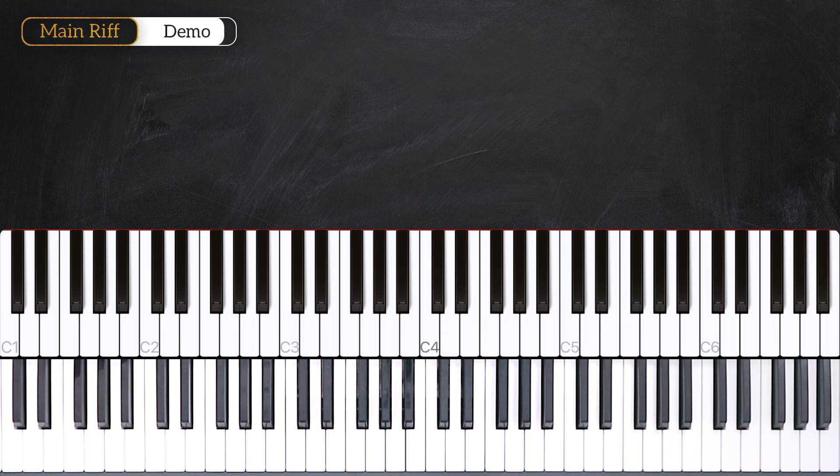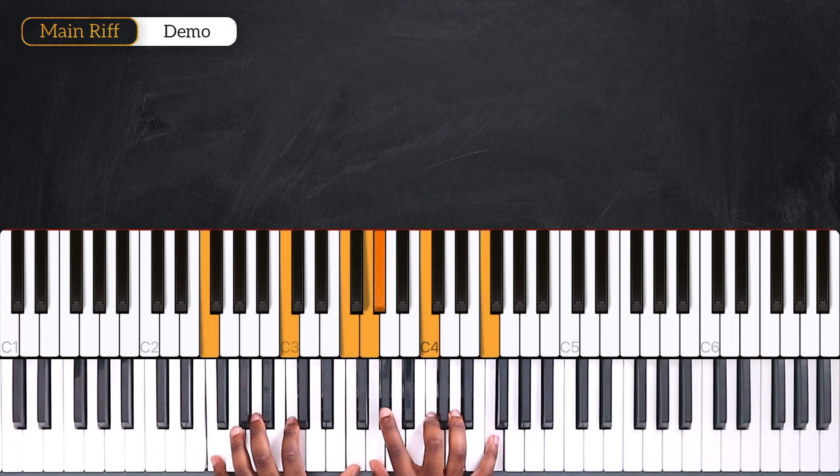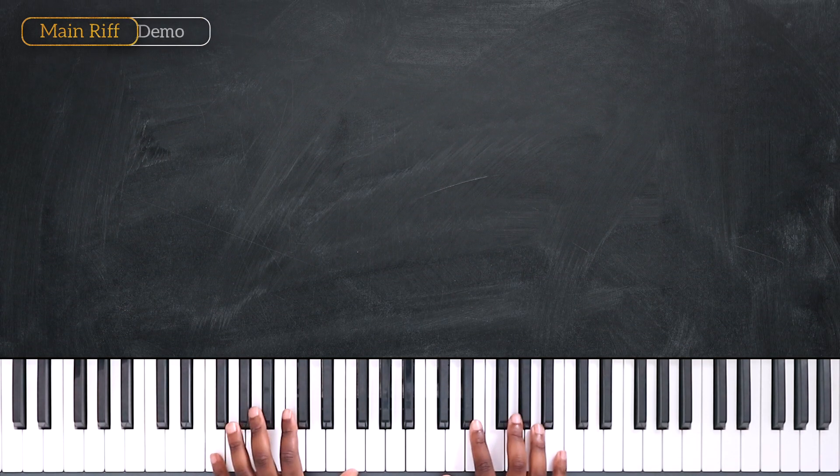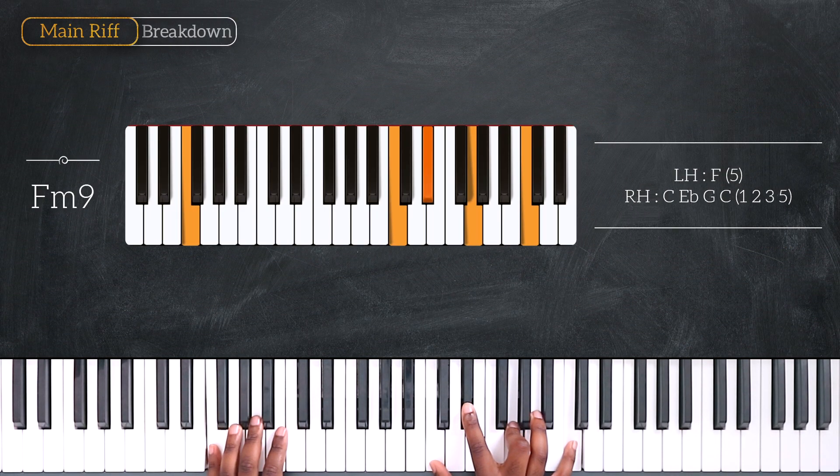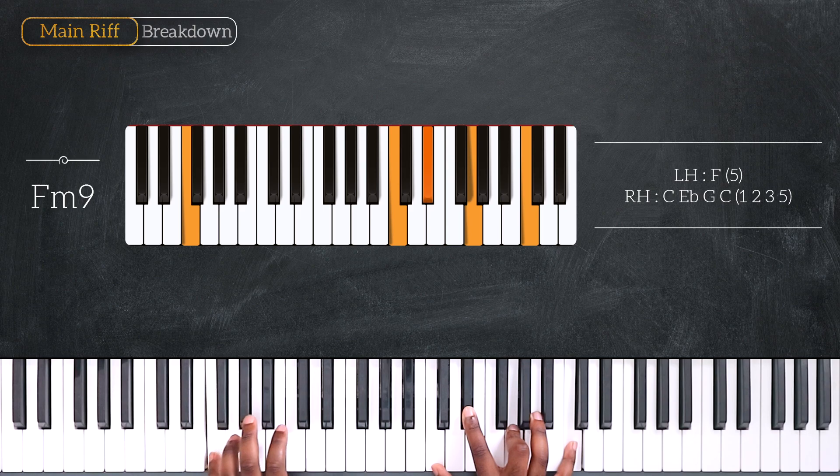So here we have a chord progression that we're going to repeat for the entire track. We're playing in the key of F minor and we're starting with F minor 9, playing F on the left with C, Eb, G and C right hand.